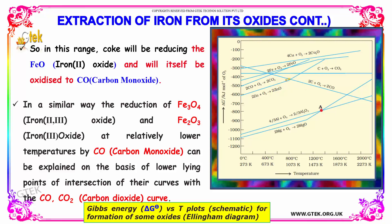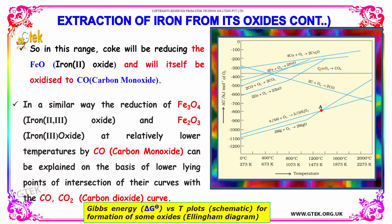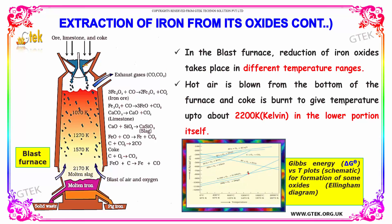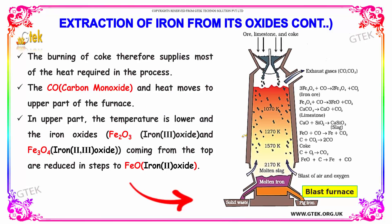In a similar way, the reduction of Fe3O4, Fe2O3, and FeO at relatively lower temperatures by carbon monoxide can be explained on the basis of the lower-lying points of intersection of their curves with the CO/CO2 curves. In the blast furnace, hot air is blown from the bottom and coke is burned to give temperatures up to 2200 Kelvin in the lower portion. The burning of coke supplies most of the heat required in the process.